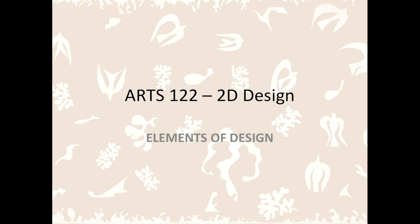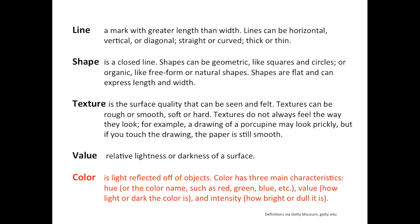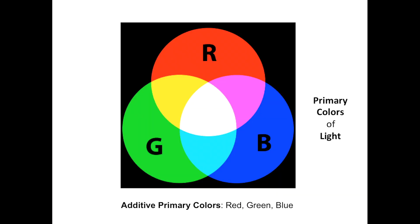Good design doesn't happen accidentally — design is deliberate. Color creates the opportunity for a broad set of variables for the artist or designer to control. Studying color involves science as well as art. Our eye sees reflected light — light that reflects or bounces off objects. Without light, there is no color.